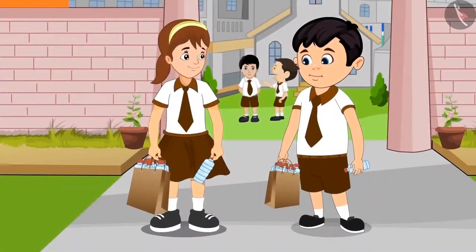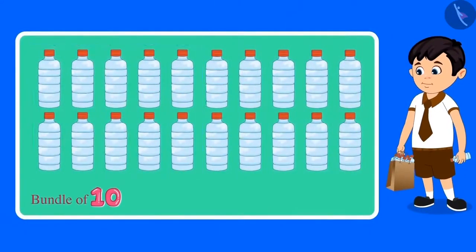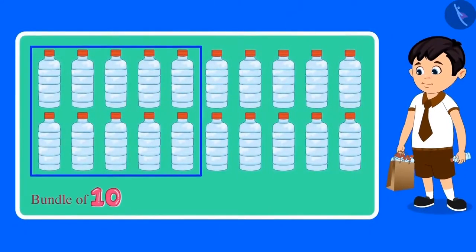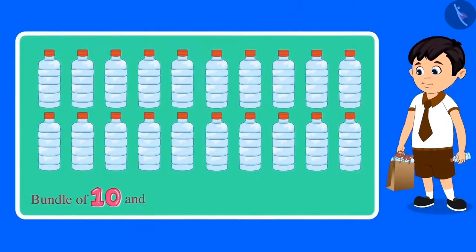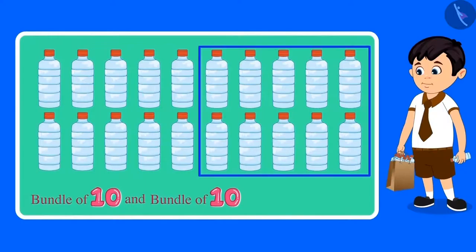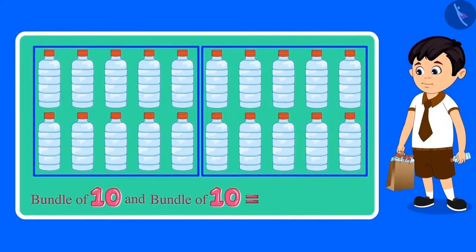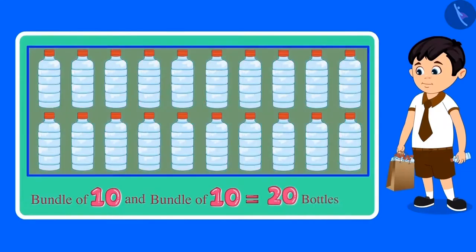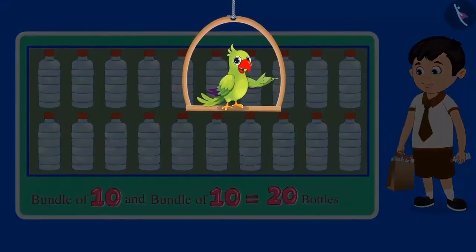Now let us count the number of bottles that Chotu has collected. This is one bundle of 10 bottles, and this is another bundle of 10 bottles. These are 2 bundles of 10, so these are 20 bottles. This means that Chotu has collected a total of 20 bottles.